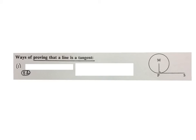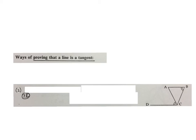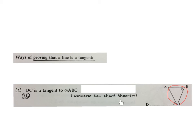Now we're going to look at the two ways of proving that the line is a tangent. Here they told us that PS is perpendicular to the radius MP. So they told us this is a radius. They tell me it's perpendicular. Then your statement will be PS is a tangent to the circle M. The reason, converse tan perpendicular to radius. If you know that that angle is equal to that angle, then you write DC is a tangent to circle ABC. And your reason, converse tan chord theorem.